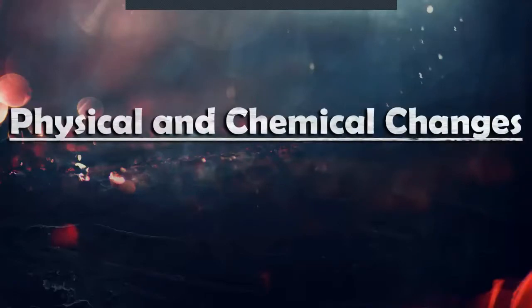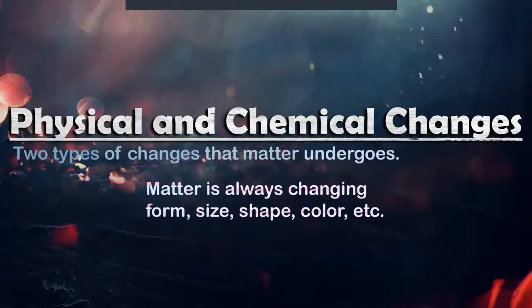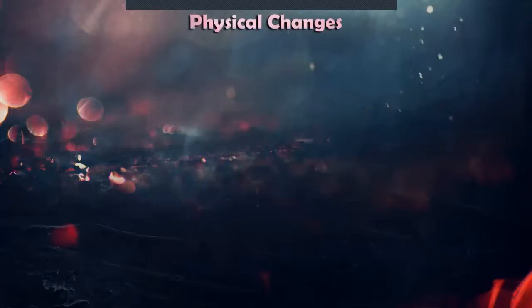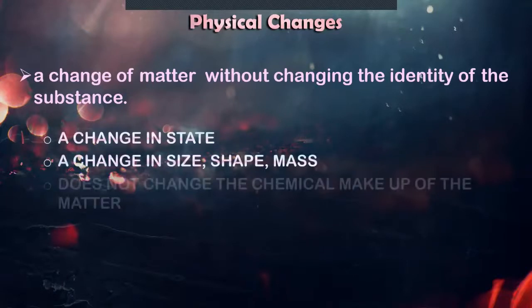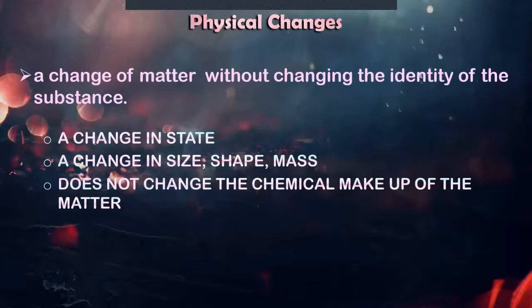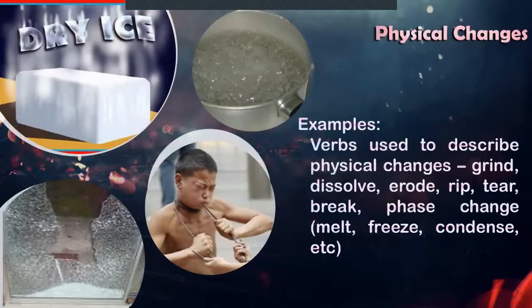Physical and chemical changes, the two types of changes that matter undergoes. Matter is always changing from size, shape, color, form. Physical changes is a change of matter without changing the identity of the substance. It is simply a change in state, a change in size, shape, mass. It does not change the chemical makeup of the matter. You have what you started with just in a different form. These are the words used to describe physical changes: grind, dissolve, erode, rip, tear, break, phase change.